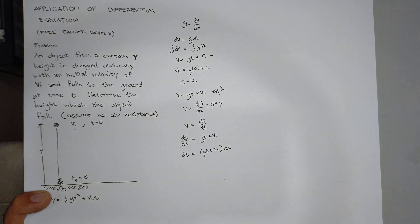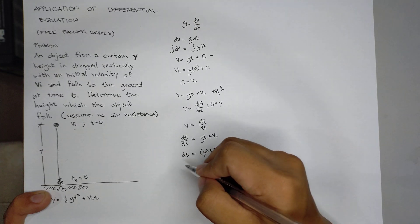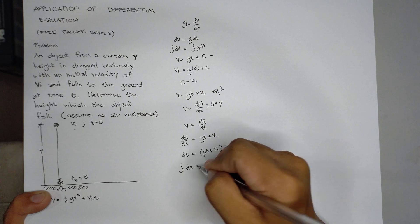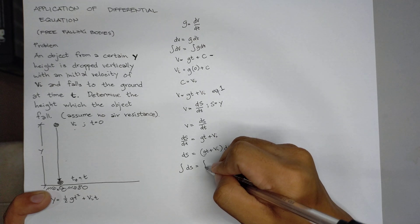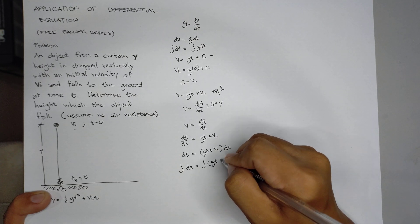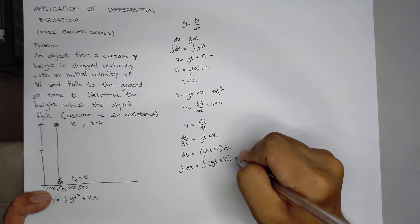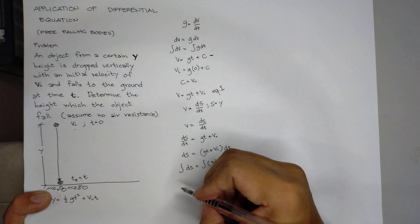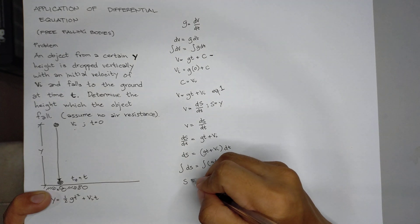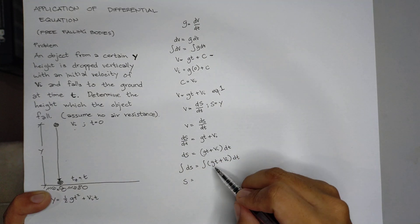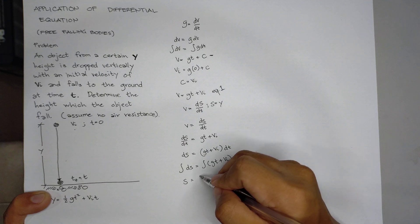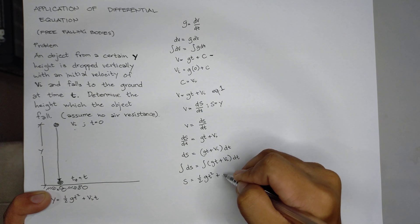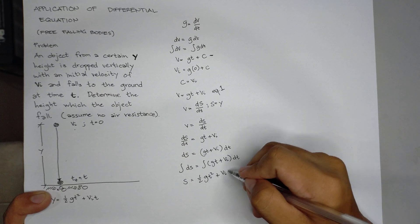We have integral of ds equals to the integral of g t plus vi times dt. Therefore, s equals to the integral of g t is equals to 1/2 g t² plus vi times dt.